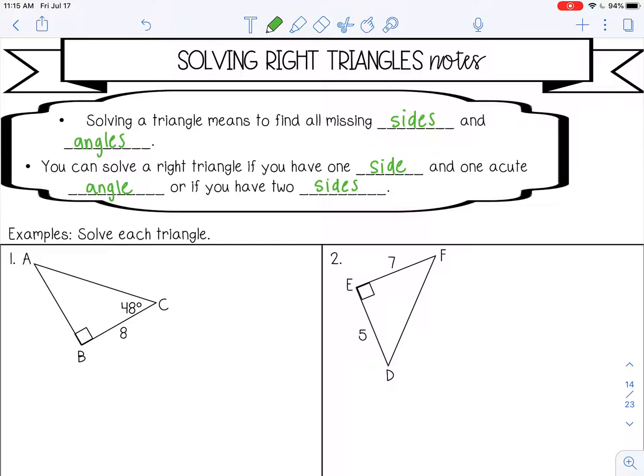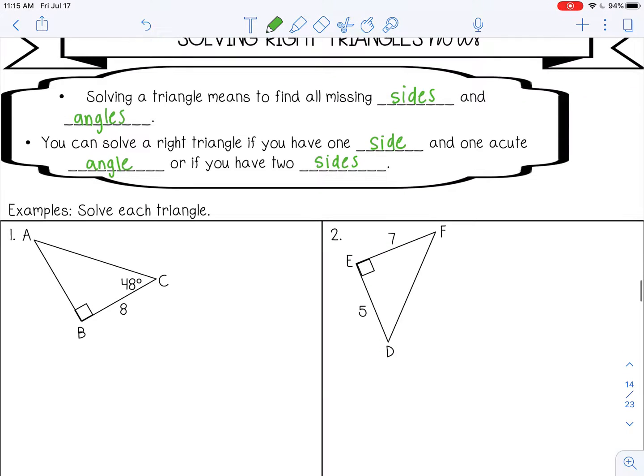So let's try some examples. The first thing that I would do is list out what you are missing. So in this first example, I'm missing the measure of angle A, I'm missing the length of side AB, and the length of side AC. It doesn't matter what order you list those in, just list them out and pick one to solve for first.